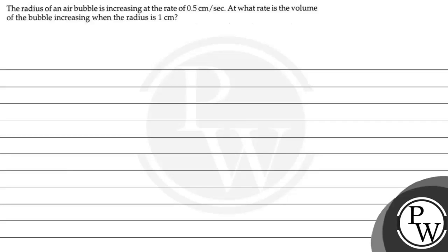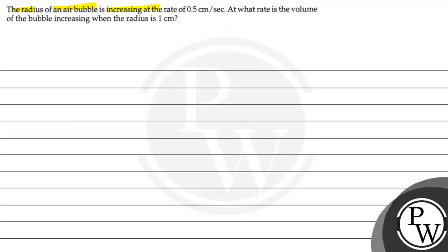Hello, let's first read the question. The question says that the radius of an air bubble is increasing at a rate of 0.5 cm per second, and at what rate is the volume of the bubble increasing when the radius is 1 cm?